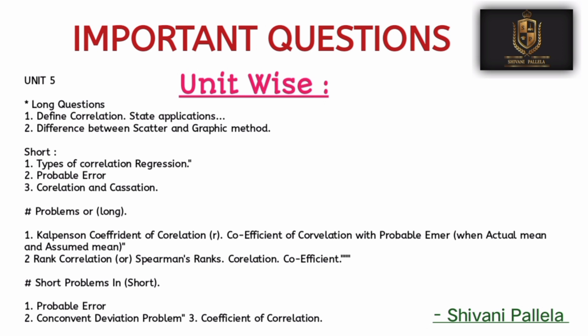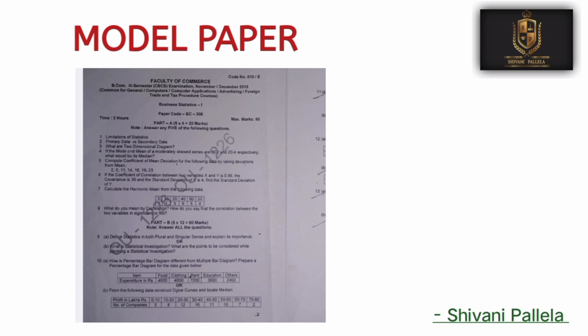Unit Number 5 long theory important question: define correlation and state its applications. For problematic questions: Pearson's coefficient of correlation and rank correlation — specifically Spearman's rank correlation. Unit 5 problematic topics include Pearson's and Spearman's rank correlation. For short theory: types of correlation, probable error, and correlation coefficient.